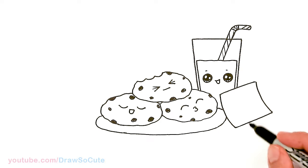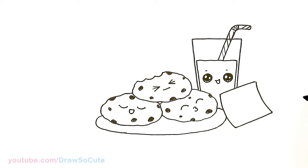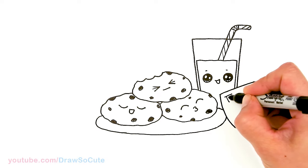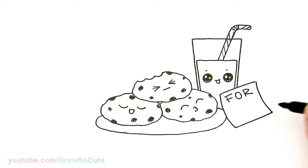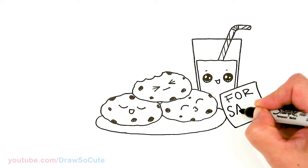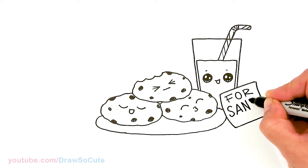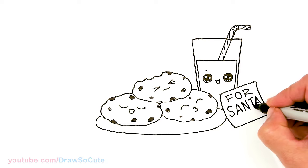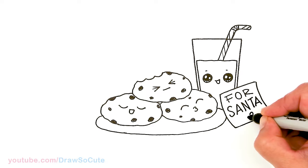And then of course let's write our little note for Santa. So I'm going to say, I could put dear Santa, for Santa, or to Santa. I'll put for Santa. Just make sure my N is kind of towards the center so I still have room for my T and my A. Yay, I did it. Okay, for Santa. And then of course you're going to have to give him a little heart right here.